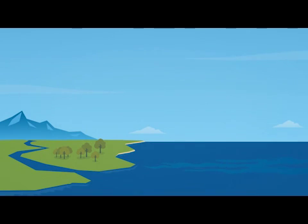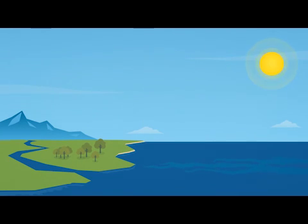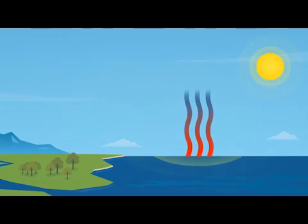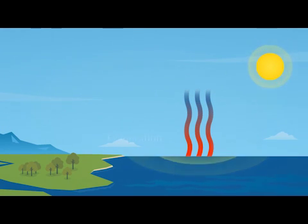Let's look at the science of rain and how raindrops fall. First we will need the sun. When the Sun shines on water on the Earth's surface, the heat of the Sun warms the water, turning it into an invisible gas called water vapor. This process — the changing of water into a gas — is called evaporation.